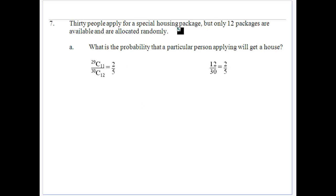This time we've got 30 people applying for a special housing package. Only 12 packages are available and allocated randomly. What's the probability that a particular person applying will get a house? Well, if one person gets a house, that means there's 11 packages left and there's 29 people to choose from. So that would be in the total number of packages, 12 people can be selected from a group of 30. So 29C11 over 30C12 gives us two fifths. The other way to look at it, you've got 30 packages available, 12, what's your chances of getting? Well, it's a 12 in 30 chance or two fifths of a chance.